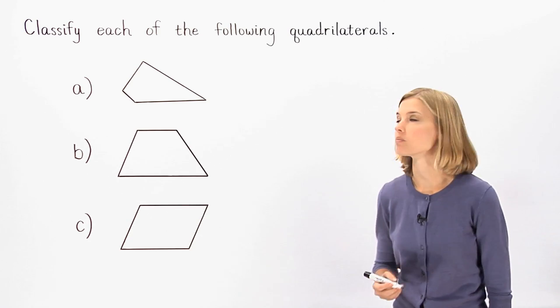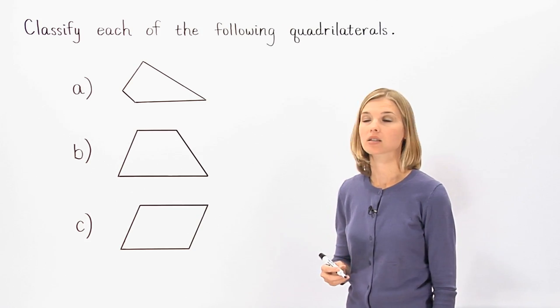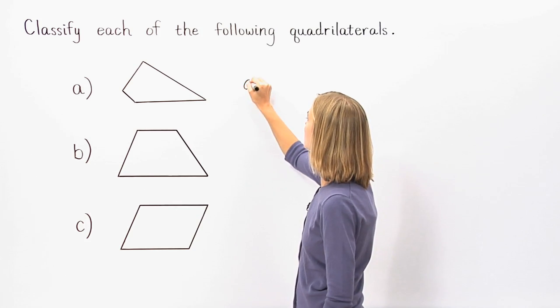For example, the first quadrilateral shown has no pairs of parallel sides, so we say it's simply a quadrilateral.